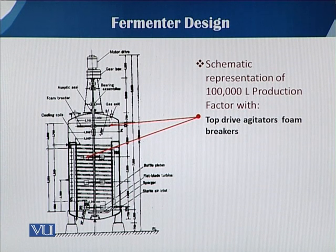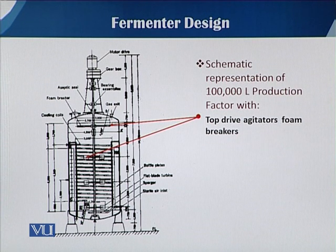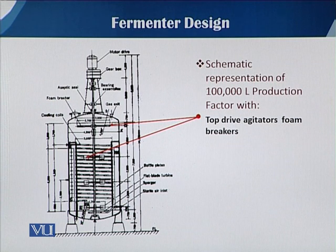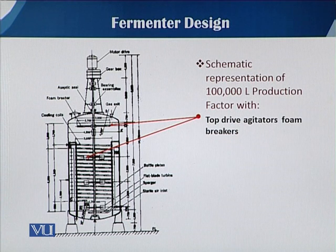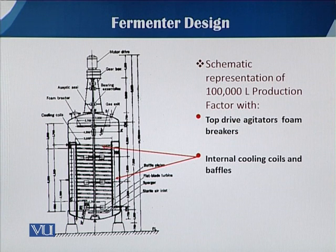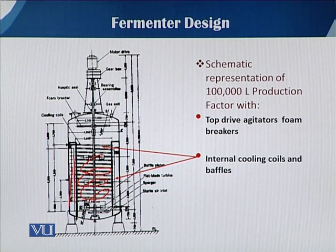If we go to large scale fermenters, you can see that a fermenter having 100,000 liter capacity has a top-driven agitator and foam breakers, because sometimes when we cannot use chemical anti-foamers we use mechanical anti-foamers or foam cutters. This provision is mostly found in large scale fermenters. You can also see that internal cooling coils and baffles are easily visible in this fermenter — these are the rounding coils and on the side there are baffles, which are mostly required in large scale fermentations.